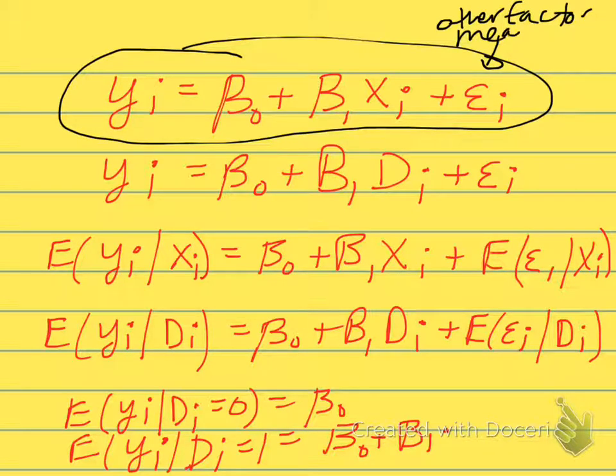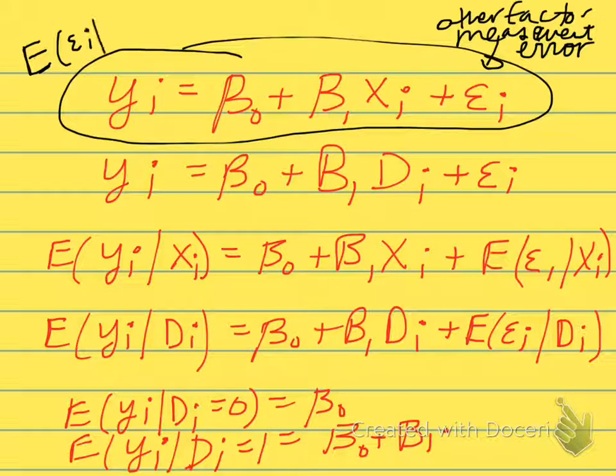And our usual assumption is the expected measurement error, the expected value of the error term conditional on the x's, is equal to 0. So the expected value of the error term, conditional on xi, is equal to 0.